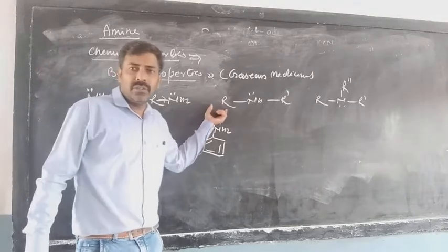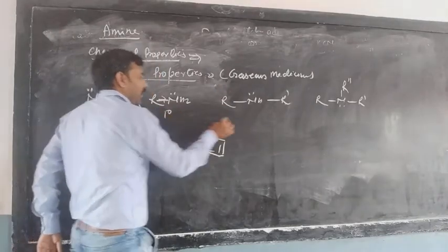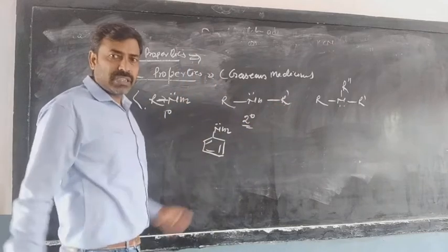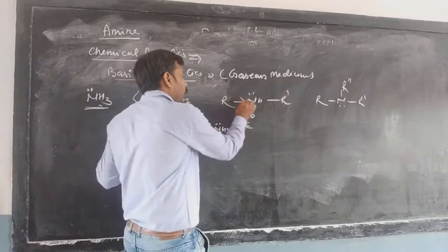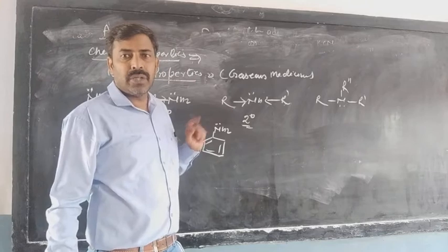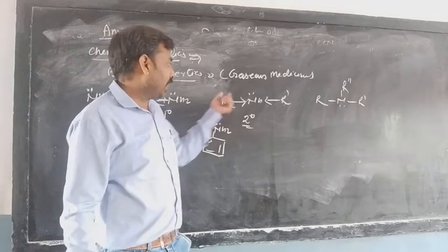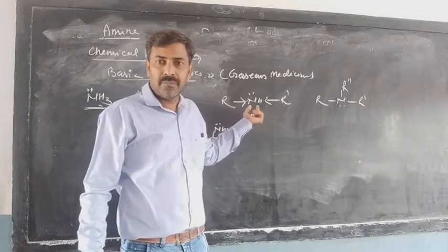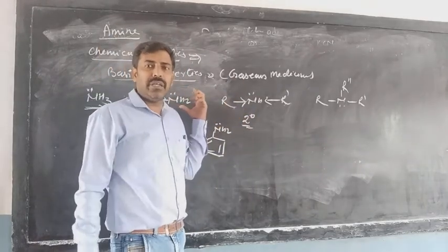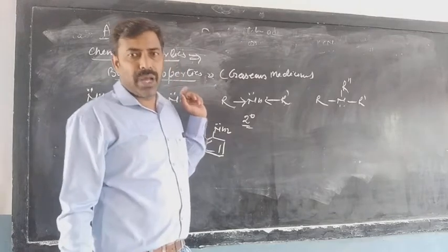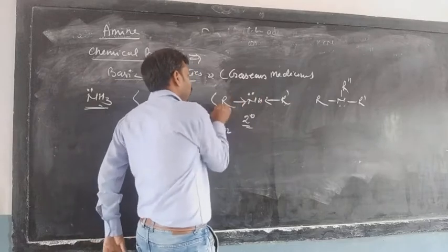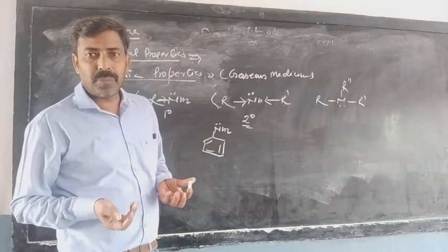Now we are reaching to the secondary amine. The secondary amine has two alkyl groups, giving greater electron donating tendency, greater electron density on the nitrogen, and a greater +I effect. This is the reason why the secondary amine is considered to be more basic than the primary amine. With two alkyl groups - two electron donating groups - the basicity of the secondary amine is greater than the primary amine.